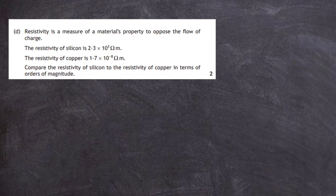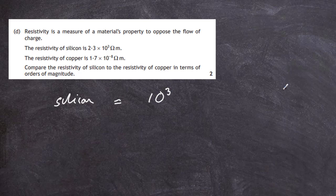Question 14, part d: resistivity is a measure of a material's property to oppose the flow of charge. The resistivity of silicon is 2.3 × 10³ ohm meters, and the resistivity of copper is 1.7 × 10⁻⁸ ohm meters. We must compare these in terms of orders of magnitude for two marks. When dealing with orders of magnitude, we can ignore the 2.3 and 1.7 — these numbers are very close — and just compare the powers of 10. Silicon has an order of magnitude of 10³ ohm meters.